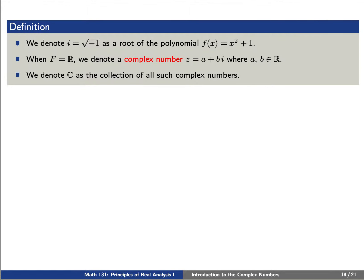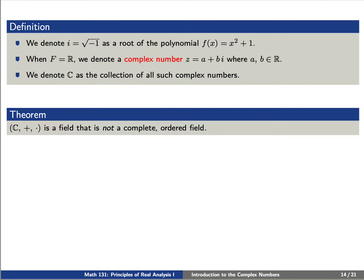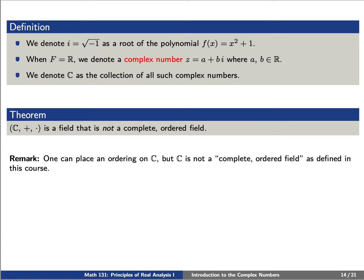We'll use all of this to motivate now a definition. We'll denote i, which is the square root of minus 1, as the root of the polynomial x squared plus 1. When f is the real numbers, we'll denote a complex number as a number in the form a plus bi, where a and b are real numbers, and we'll denote C as the collection of all such complex numbers. We'll see that C is a field that is not a complete ordered field. As a caveat, you can actually place an ordering on C, but based on the definitions we're using in this course, C is not a complete ordered field in our sense.